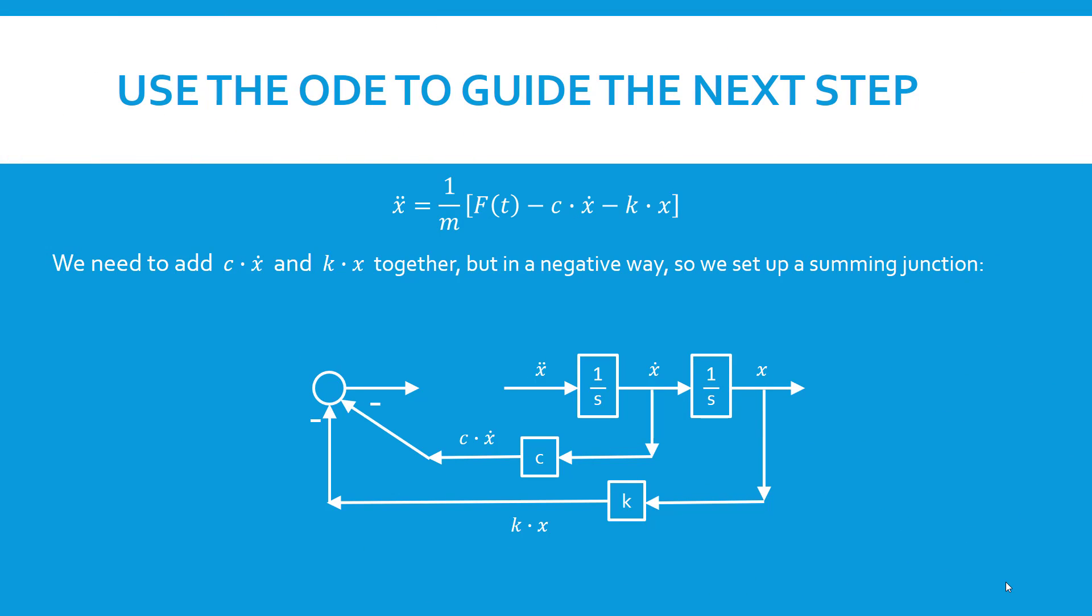By referring to the equation, we see that we need to add c times x dot and k times x together, but in a negative way. So we set up a summing junction and we lead those results into the summing junction, but in a negative way. What comes out of the summing junction is these two summed together in a negative way, just what we needed.